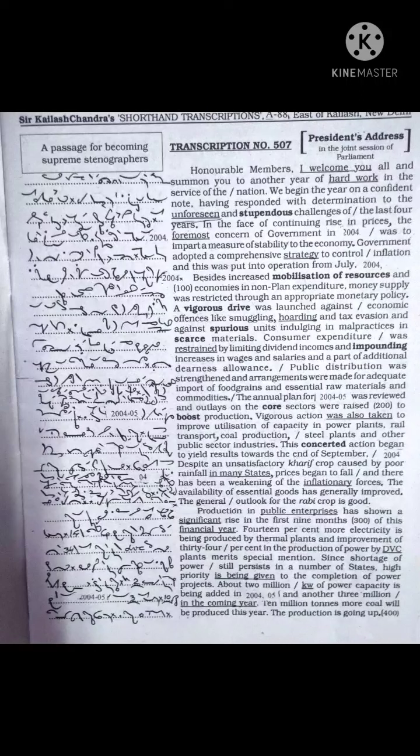Besides increased mobilization of resources and economies in non-plan expenditure, money supply was restricted through an appropriate monetary policy. A vigorous drive was launched against economic offences like smuggling, hoarding and tax evasion and against spurious units indulging in malpractices in scarce materials. Consumer expenditure was restrained by limiting dividend incomes and impounding increases in wages and salaries and a part of additional dearness allowance.